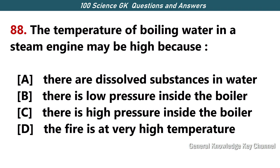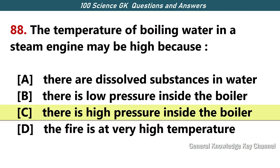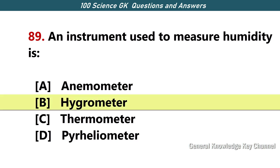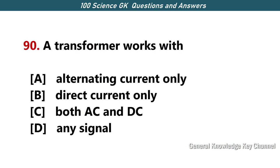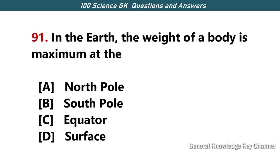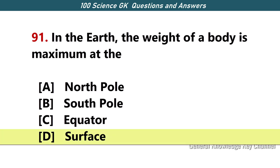The temperature of boiling water in a steam engine may be high because — Answer C — there is high pressure inside the boiler. An instrument used to measure humidity is — Answer B — hygrometer. A transformer works with — Answer A — alternating current only. In the earth, the weight of a body is maximum at the — Answer D — surface.